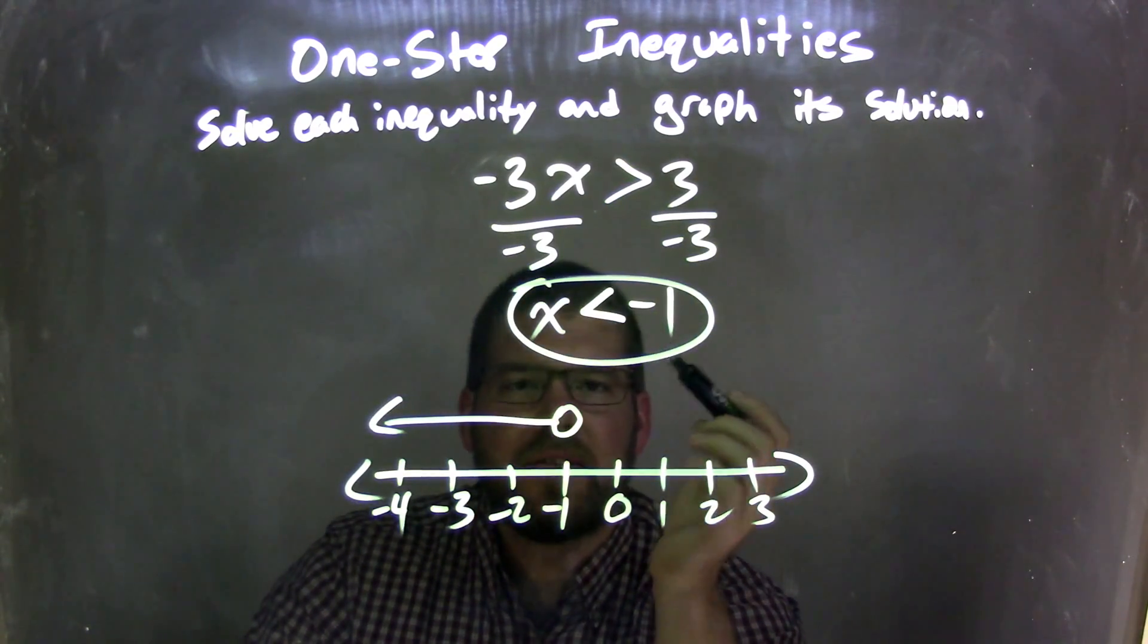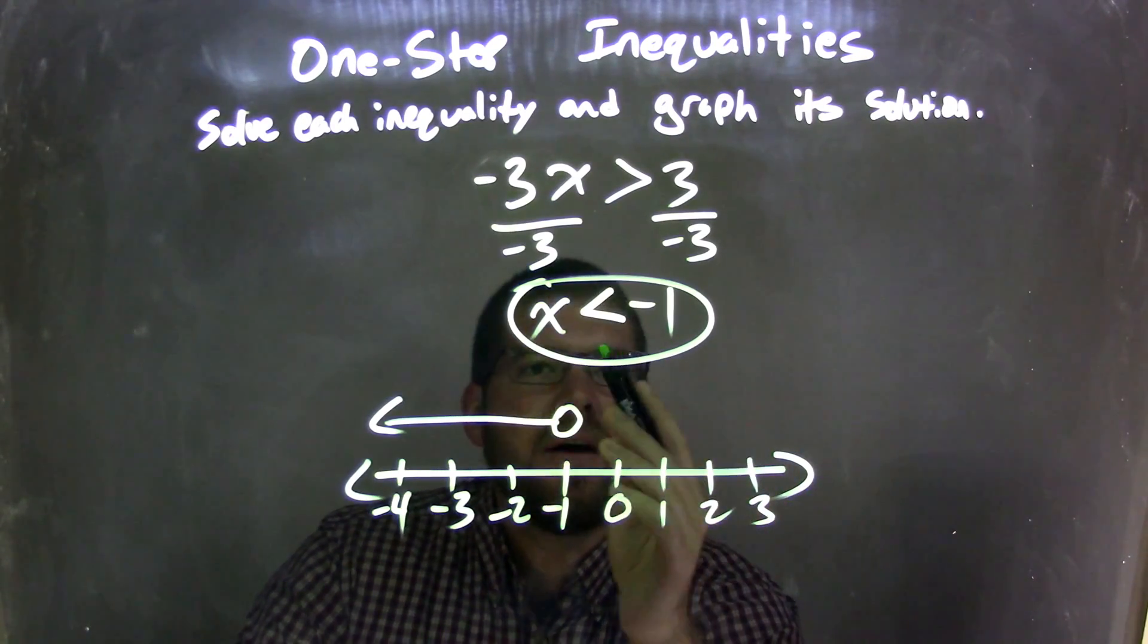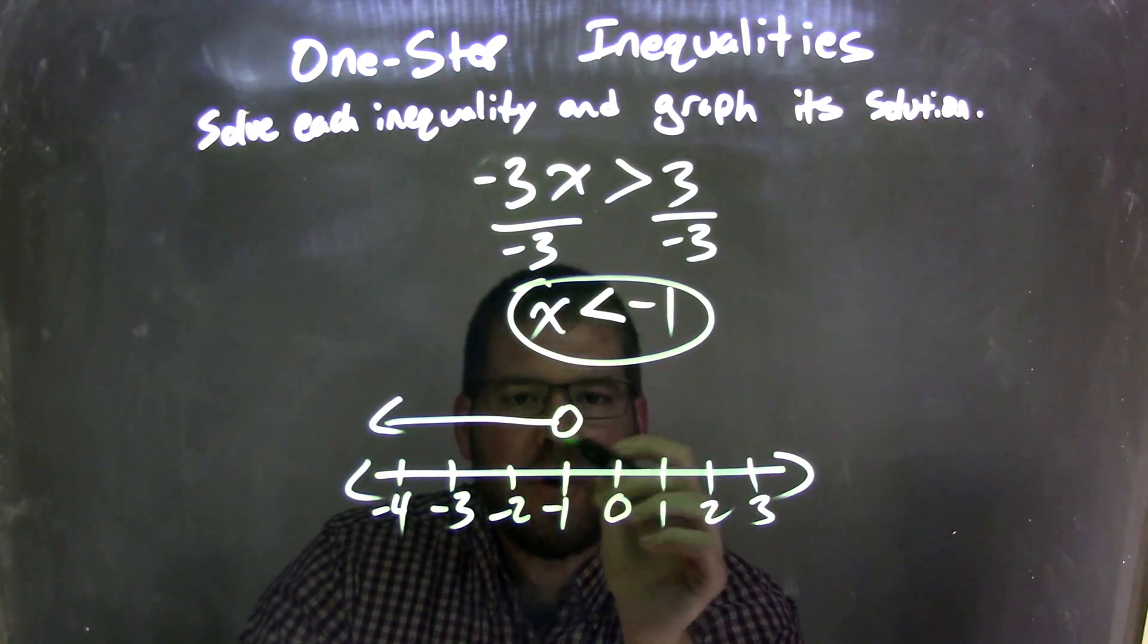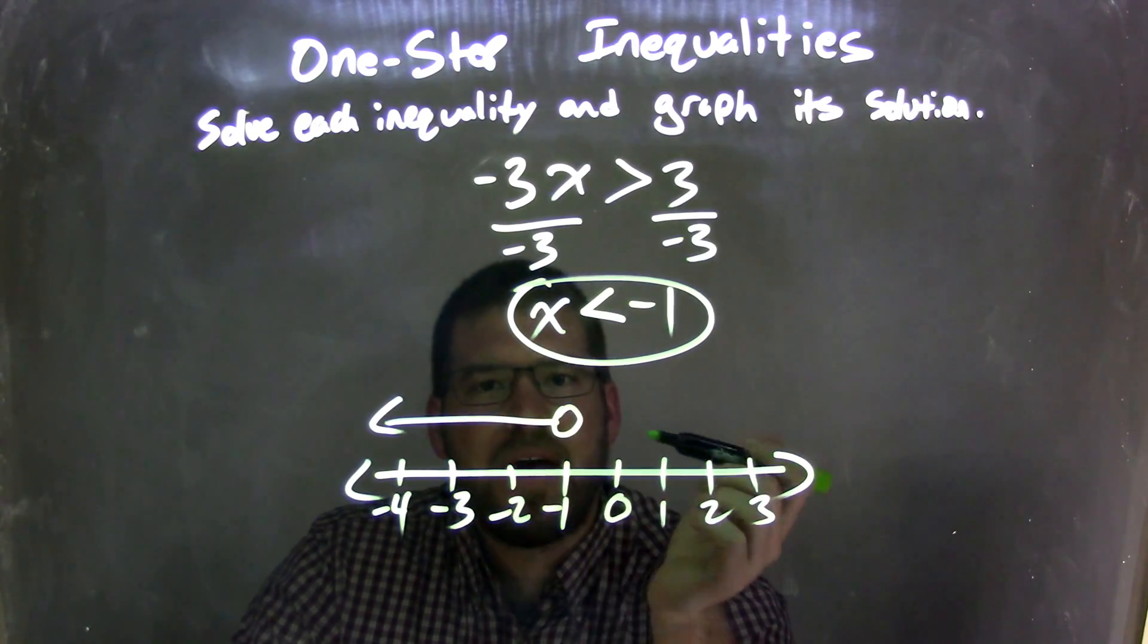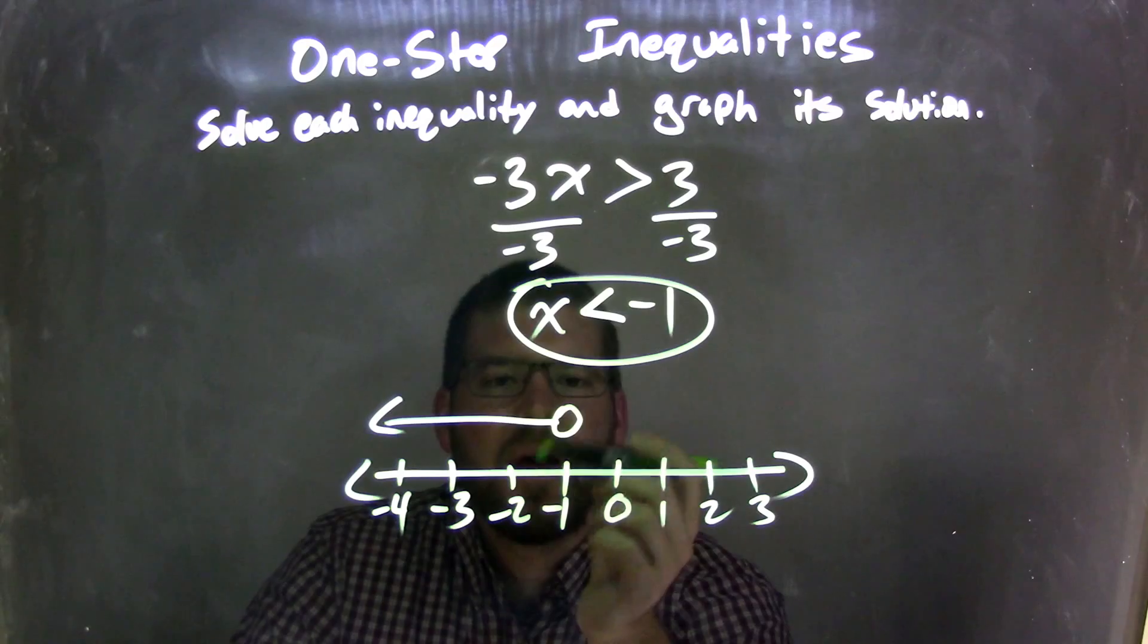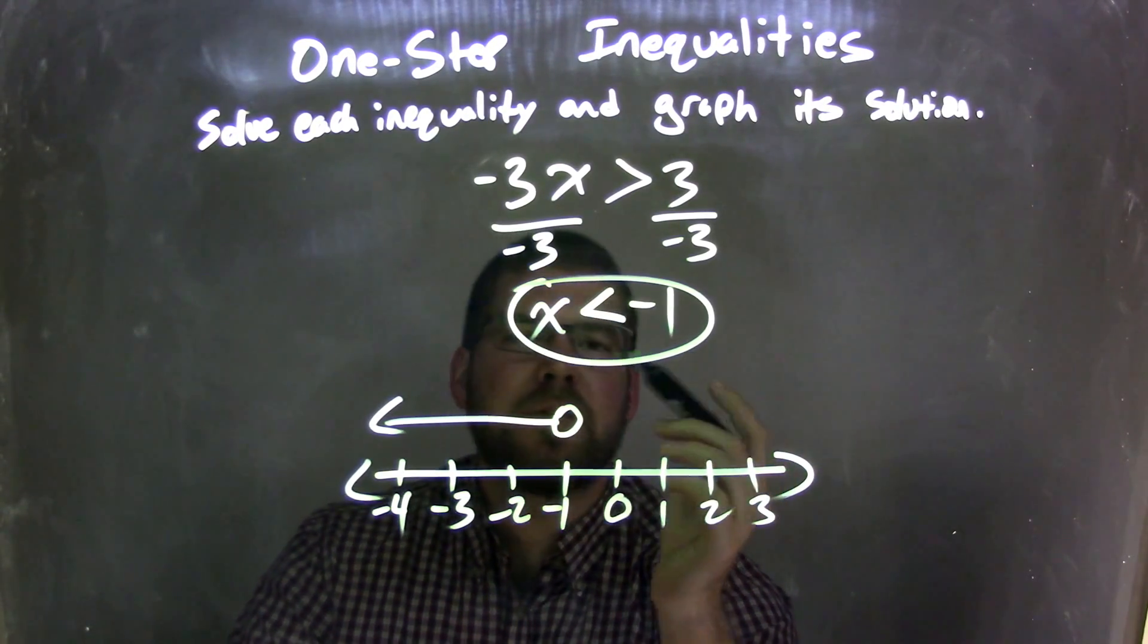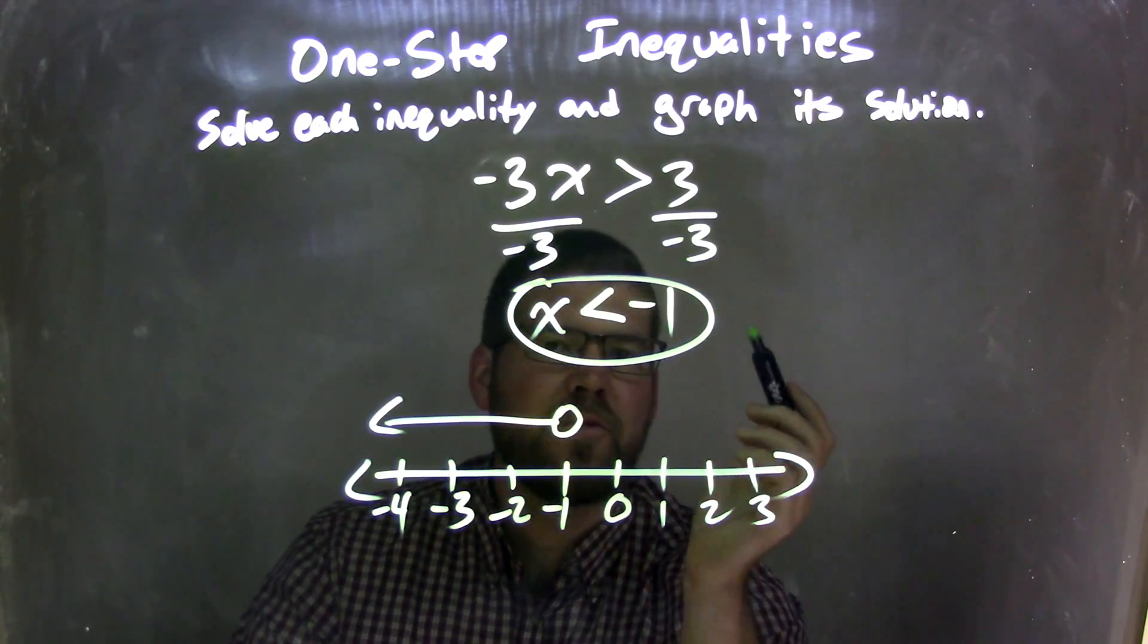x is isolated by itself, which is great, so now when I graph it, since it's just less than, where it's not equal to negative 1, I have an open circle at negative 1, and then my arrow goes to the left, showing that x is less than negative 1. So the graph here matches up with my final answer, which is x is less than negative 1.